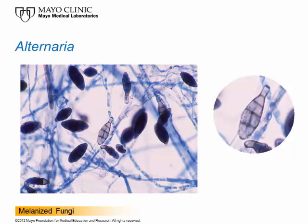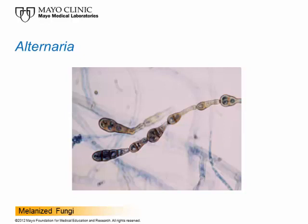Notice that some of these Alternaria conidia are very dark — you can't even see the septations in them because there's so much melanin in the cells. Sometimes cells just have brown pigment that is so dark it's very difficult to tell what they are. You can see the long beak and the horizontal and longitudinal septations, but it's hard to see except in lighter cells. You have to look at all the slides and examine every field to find good examples.